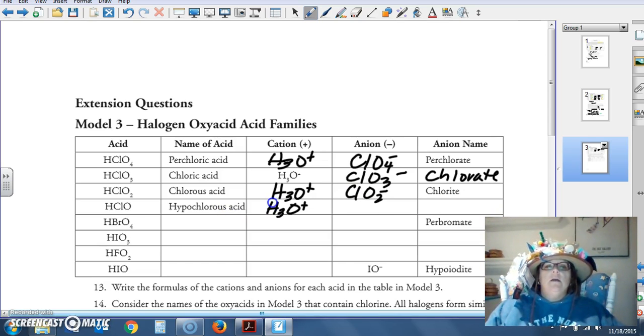Hypochlorous acid, hydronium ion, ClO, which is hypochlorite.